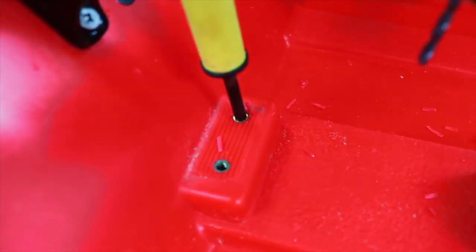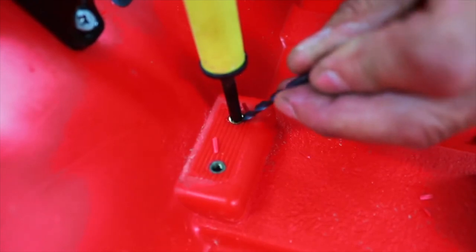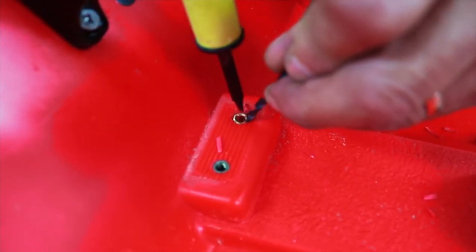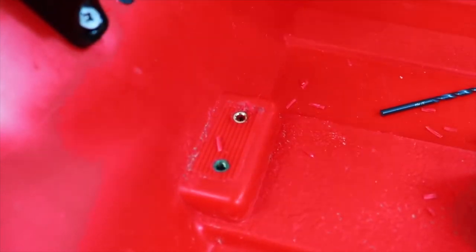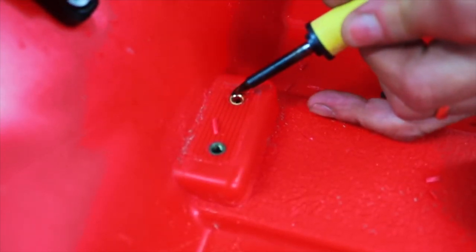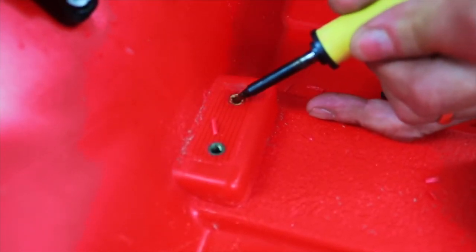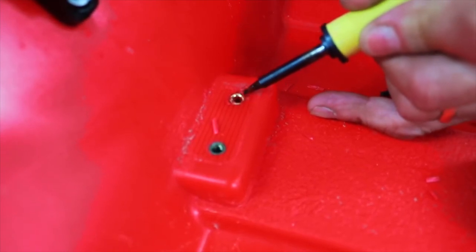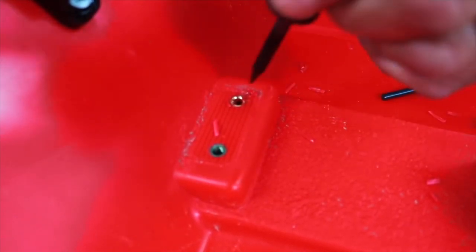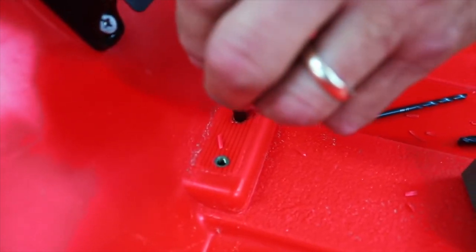Now the trick here is to use the drill bit so that you can lift the soldering iron away. As you can see there that's gone in really nicely. I'm just going to tidy up a little bit around here and then just melt that plastic away.